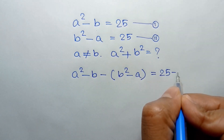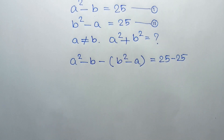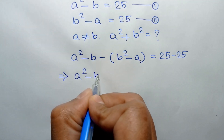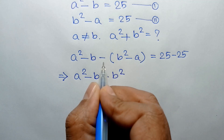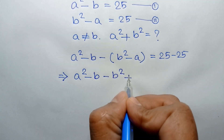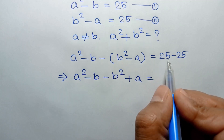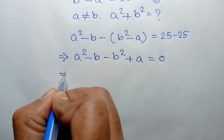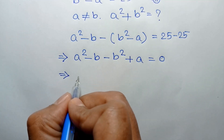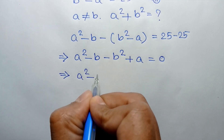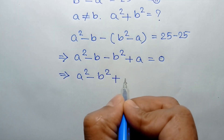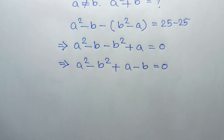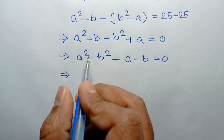Expanding, we get A squared minus B minus B squared plus A is equal to 0. Rearranging, we can write A squared minus B squared plus A minus B is equal to 0.